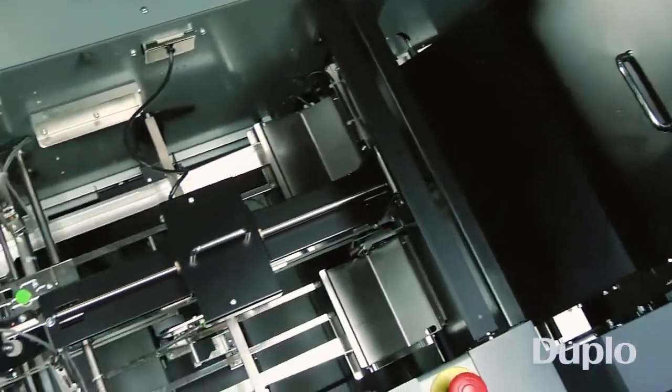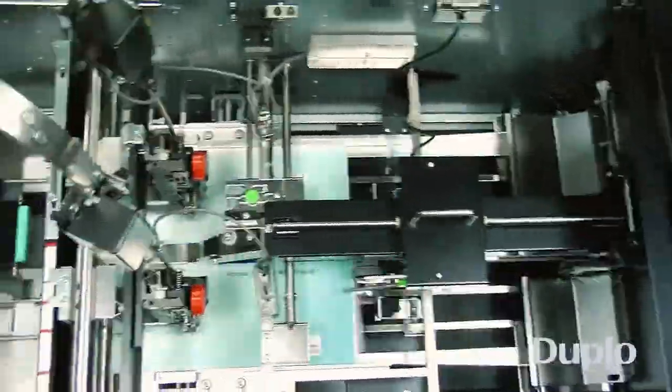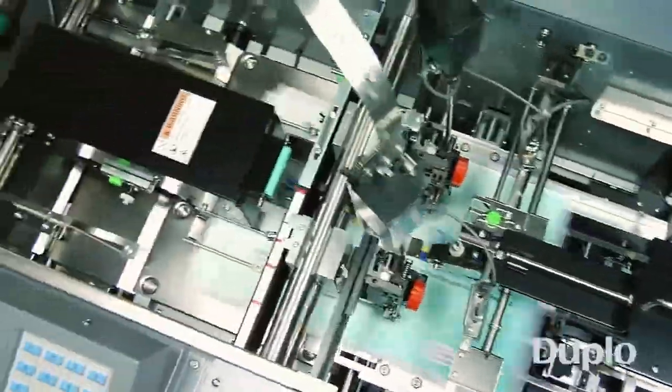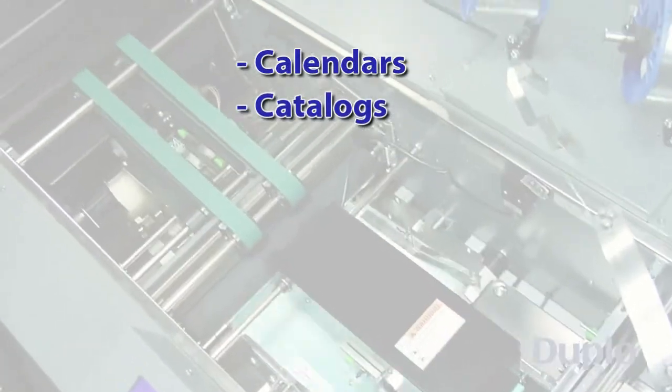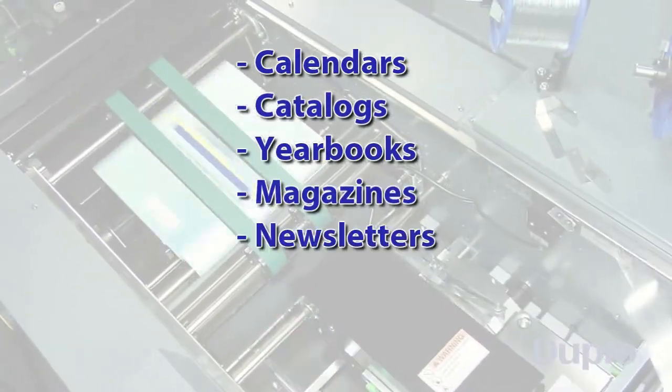At 400 sheets per minute, the DSF 5000 is the ideal sheet feeder for a wide range of applications, including calendars, catalogs, yearbooks, magazines, newsletters, and more.